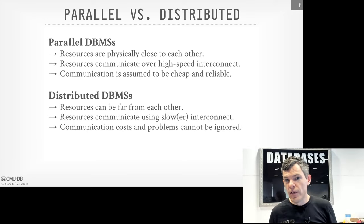Now that we've defined our process models, we want to talk about how to architect the system to support parallel execution of multiple operator instances — either running as part of the same query or across multiple queries at the same time. The high-level approaches don't really matter whether you're using multi-threading, multi-process, or multi-node in a distributed system, because it's about what you're going to execute and where you put your data. The communication cost between workers will depend on what environment and process model you're using.